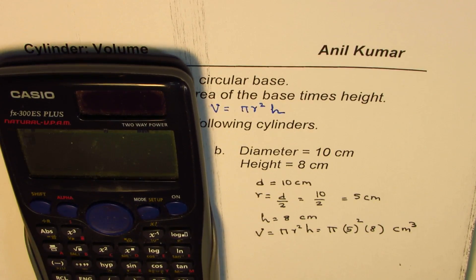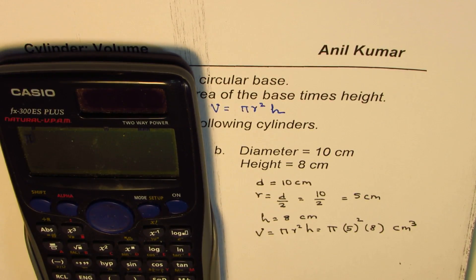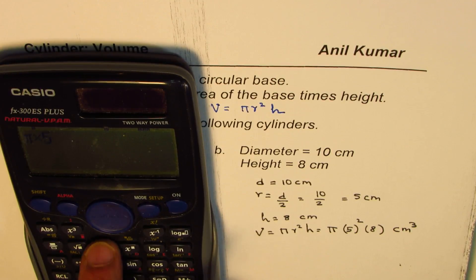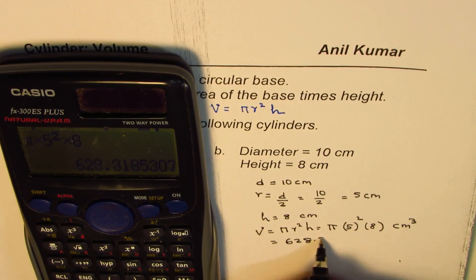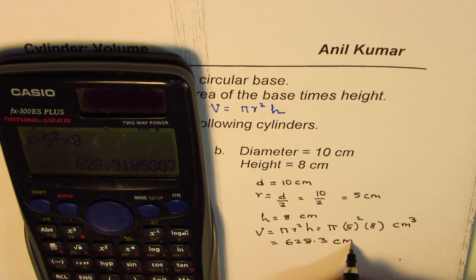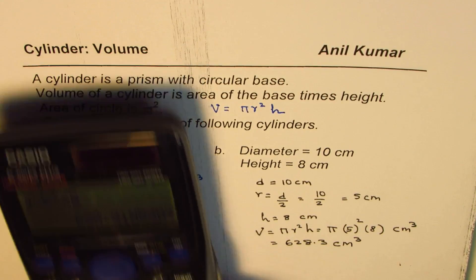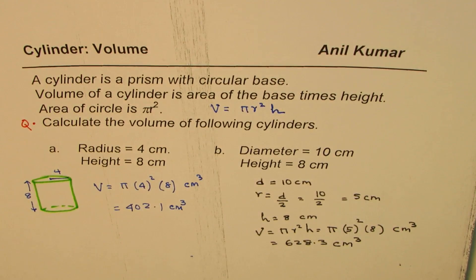So we have pi, you could use 3.14 times 5 square times 8 equals to 200 pi or 628.3 centimeter cube. So that becomes the volume in both the cases.